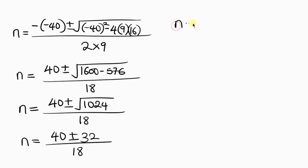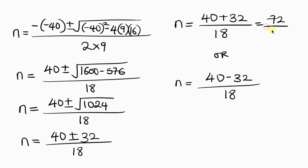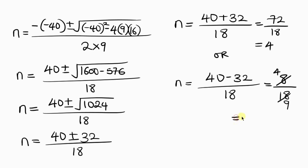Separating the two solutions: taking the plus first, n equals 40 plus 32 over 18, which is 72 over 18, giving n equals 4. Taking the minus, n equals 40 minus 32 over 18, which is 8 over 18. Simplifying by dividing numerator and denominator by 2: 4 over 9. So n equals 4 or n equals 4/9.